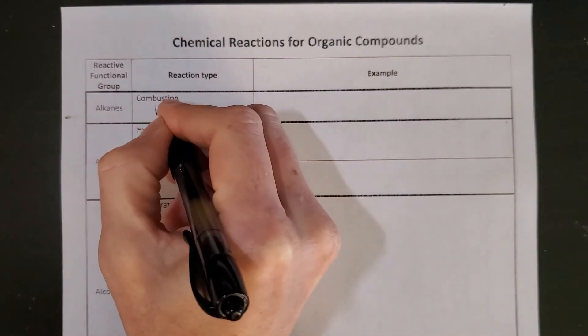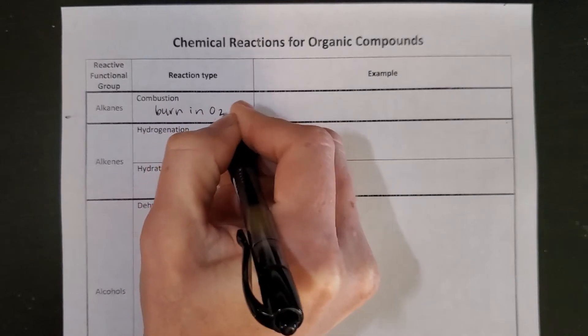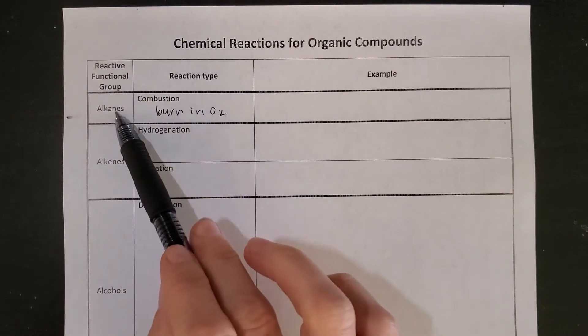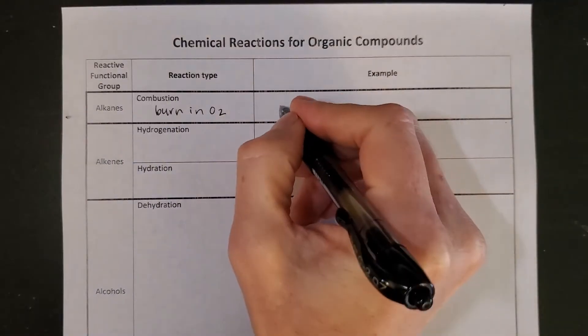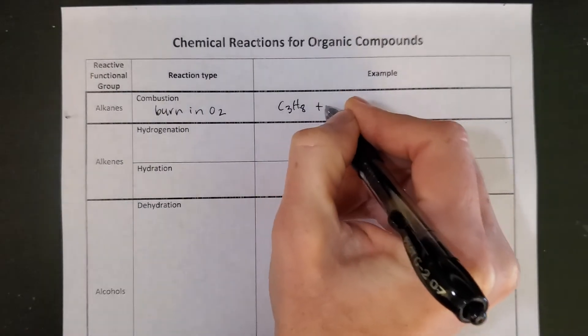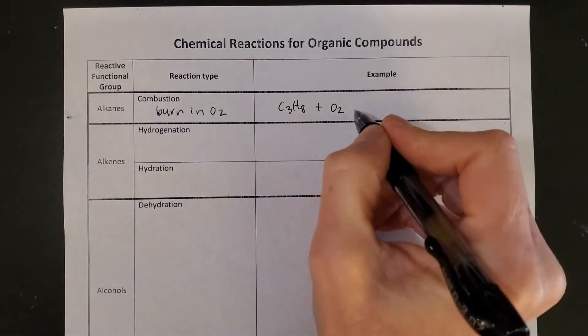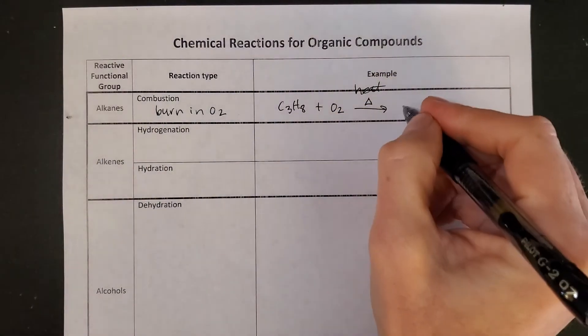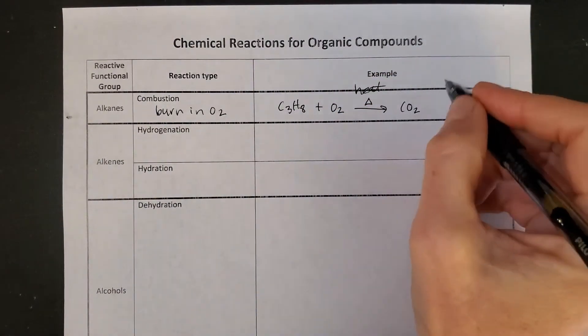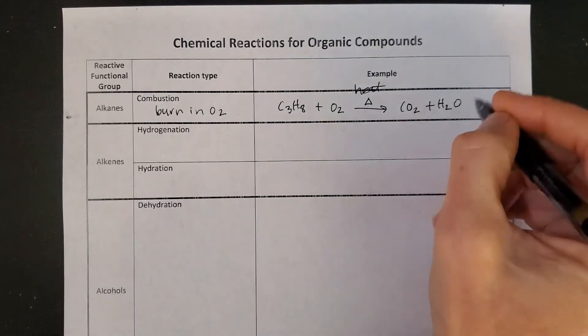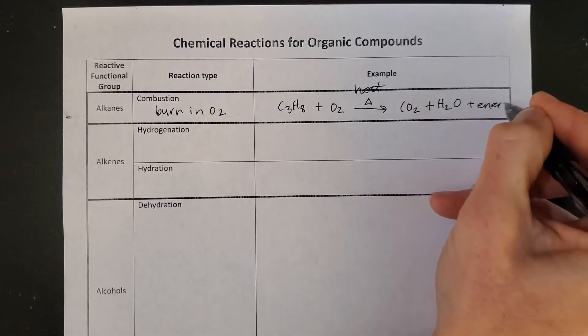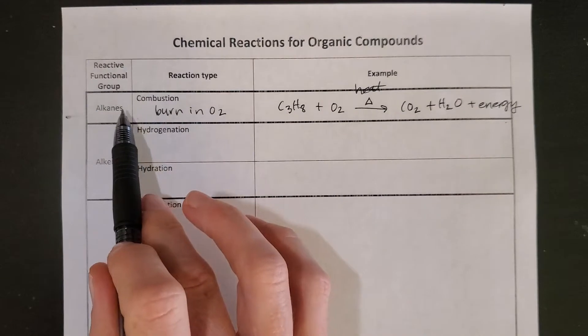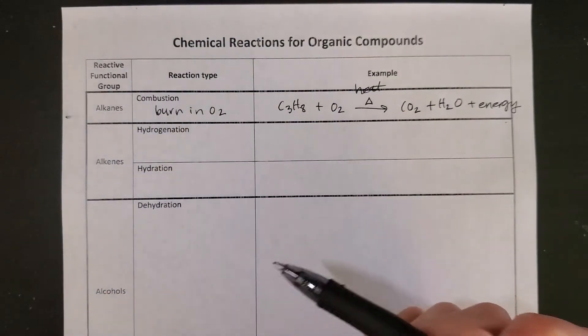Combustion is going to be reactions where we burn things in oxygen, and actually everything on this page could burn. We have it listed with alkanes because it's the only thing that alkanes can do. So I could take something like propane, it's in our gas grills, and if I give it a little bit of heat, that's what that triangle stands for, propane or other hydrocarbons will burn cleanly to give you carbon dioxide and water and energy. Notice this reaction is not balanced. I won't ask you to balance these alkane combustions on your quizzes and tests.